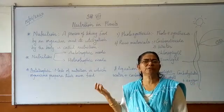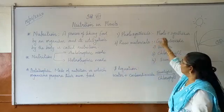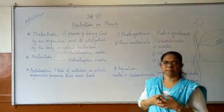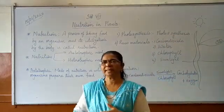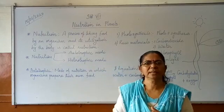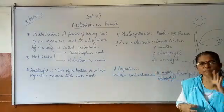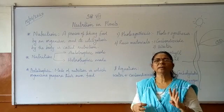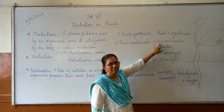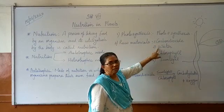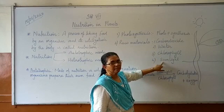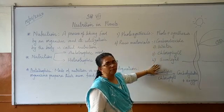What is photosynthesis? Photo means light - from the sun they get light. Synthesis means to prepare or combine. So we need four raw materials for photosynthesis. The first one is carbon dioxide, the second is water, the third is chlorophyll, and the fourth is sunlight. So these four components are essential.